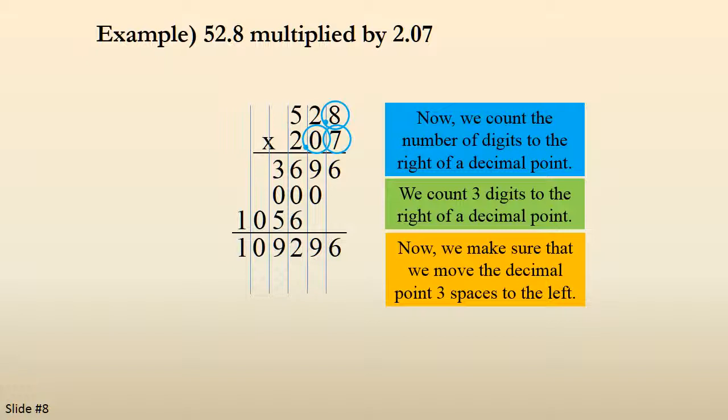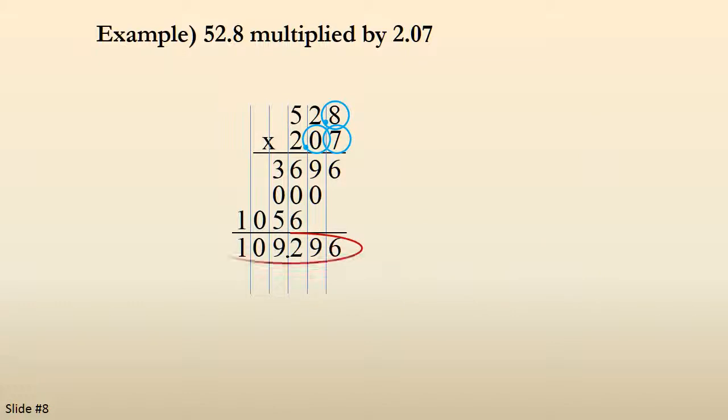Now we make sure that we move the decimal point 3 spaces to the left in our number. So it's currently at the far right hand side after the 6. So we move it 1, 2, 3 spaces to the left and that's where the decimal point goes. And therefore we have our answer: 109.296.